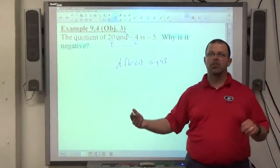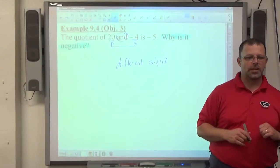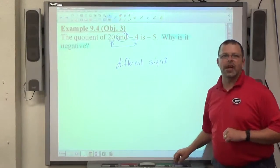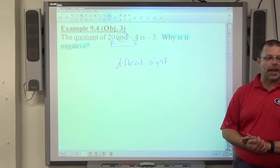Same signs is always the reason why it's positive, different signs is always the reason why it's negative. There's no other reason than that when you're dealing with two numbers at a time, multiplying and or dividing.